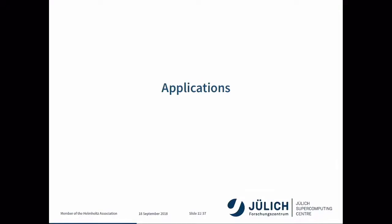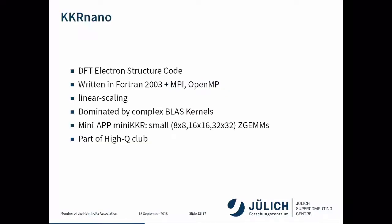The first application I want to talk about is KKR-Nano. It's a DFT electron structure code written in Fortran 2003 with support for MPI and OpenMP. It scales linearly and is mostly dominated by complex arithmetic BLAS kernels — ZGEMM specifically. There is a mini-app derived from KKR-Nano called Mini-KKR, which is what I have been working with. Basically there is a block sparse matrix-matrix multiplication, so there are a lot of ZGEMMs being called with very small matrices. This application is part of the HiQ club.